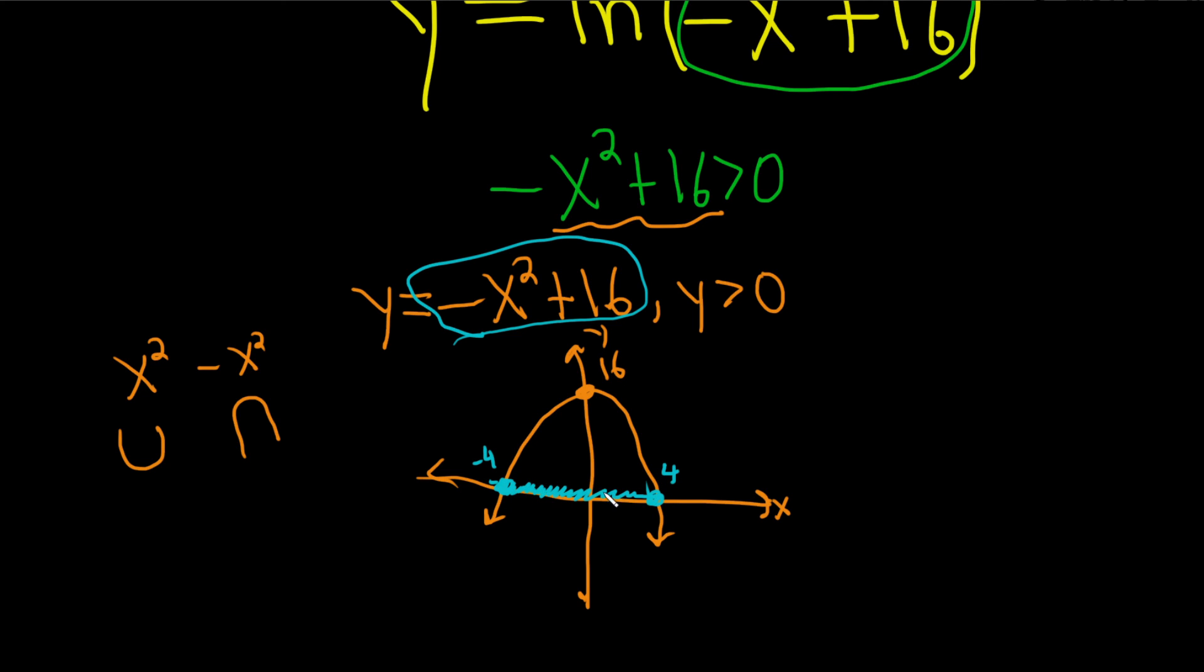So everywhere here the graph is positive. And you don't include these because you want it to be greater than zero. Your graph is actually equal to zero at four and negative four. That's actually the answer. So it would be negative four to four.